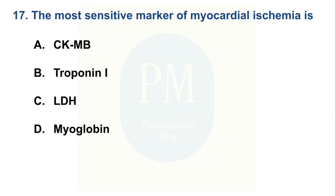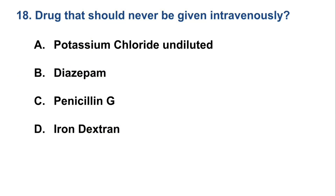A drug that should never be given intravenously: Option A: Potassium chloride undiluted, Option B: Diazepam, Option C: Penicillin G, Option D: Iron dextran. The correct option is Option A, potassium chloride undiluted.